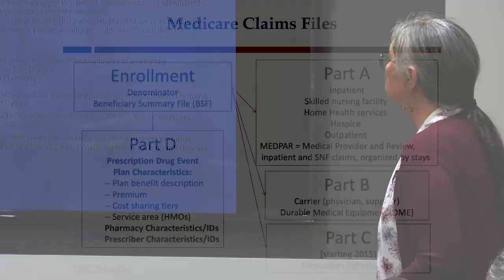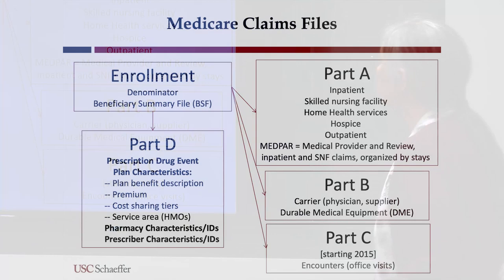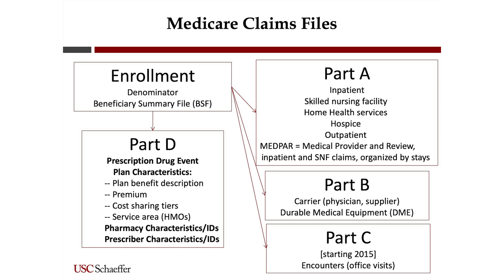Now I'll talk about the Medicare files and how the data are organized. There's the enrollment file. Over time, this file has changed from a denominator file to a beneficiary summary file — now it's always the Master Beneficiary Summary File. One thing to be aware of: there's an age variable on each of these files, and there's also a birth date.